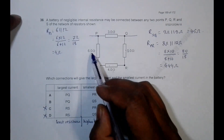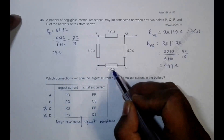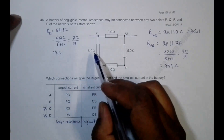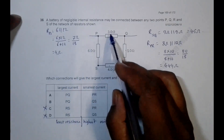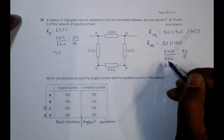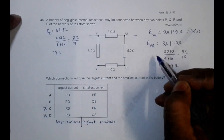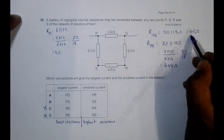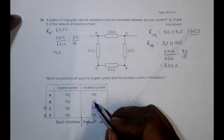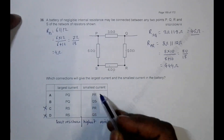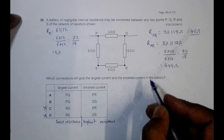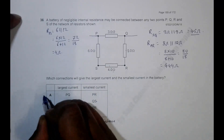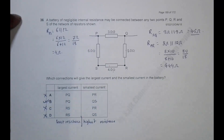Since 4.5 ohm is greater than 4.44 ohm and 4 ohm, the highest resistance occurs when connected across SQ. This means the smallest current occurs when the battery is connected across SQ, and the largest current occurs when connected across PQ. Therefore, choice B is the correct answer, and A is the wrong choice.